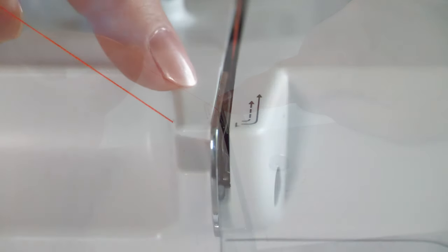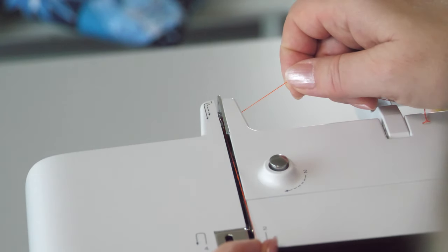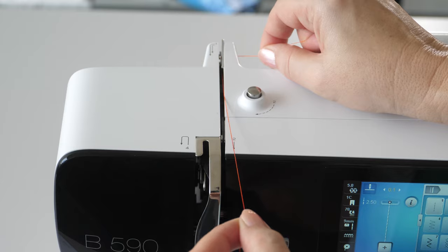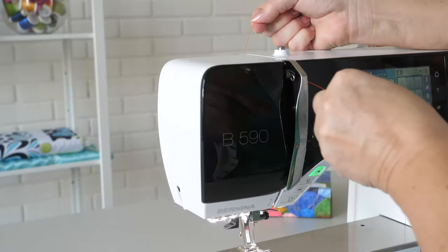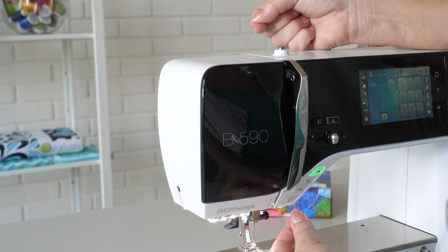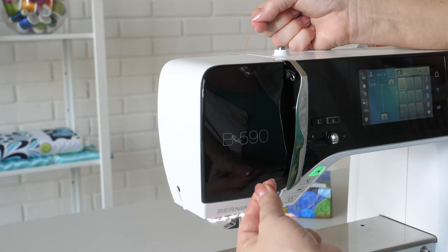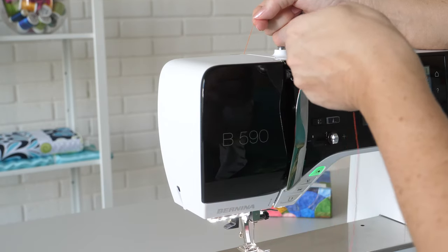Follow the numbered markings and guide the thread through the pretension. Place the thread in the open tension discs, guide it downwards around the take-up lever cover, and back up again.